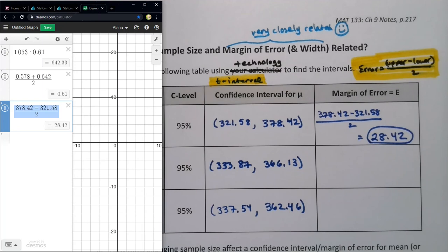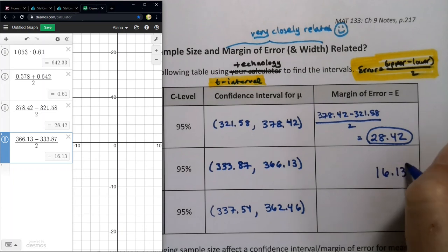Alright, now I could do it again. As a matter of fact, in Desmos, I can even copy and paste and then just change the numbers on the top. So that's an option. There we go. Oops, did I go backwards? I did. See how it came out negative? It's actually the correct answer, but I was being silly. You got to take the upper minus the lower, not the lower minus the upper. So 333.87. There we go. So it's 16.13 here.